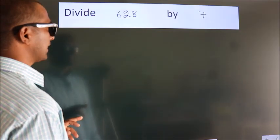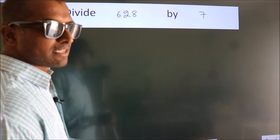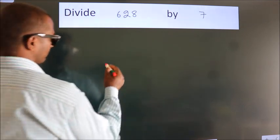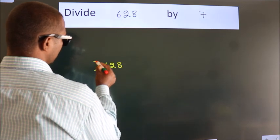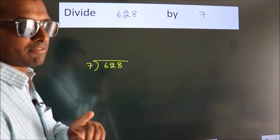Divide 628 by 7. To do this division, we should frame it in this way: 628 here, 7 here. This is your step 1.